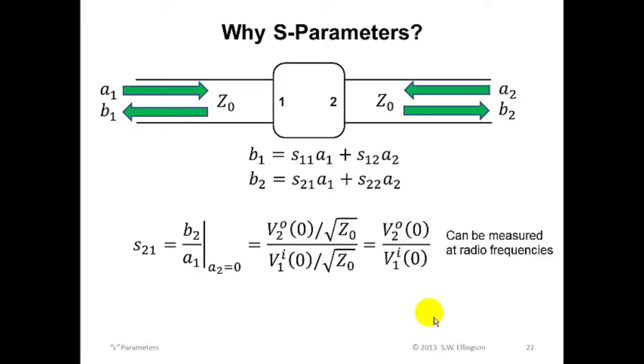First, S parameters are relatively easy to measure because they are always the ratio of voltage waves, and this ratio of voltage waves is both physical and pretty easy to measure at RF. For example, you can see that from the equations that S21 is B2 over A1 when A2 is zero. Given the defining equations from the earlier slide, we immediately find, by substitution,